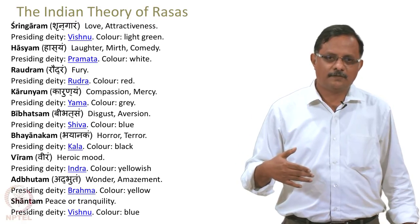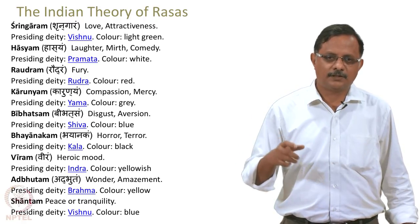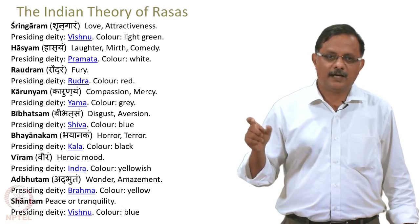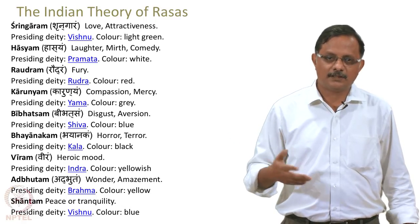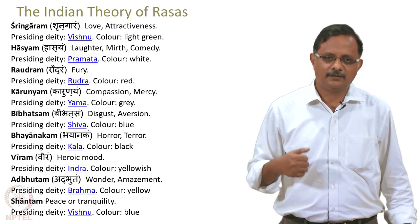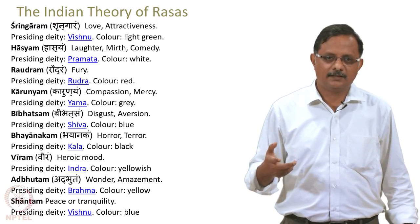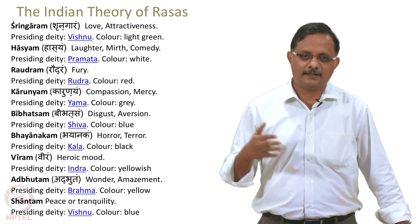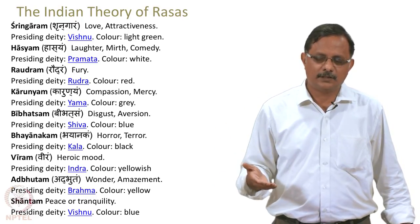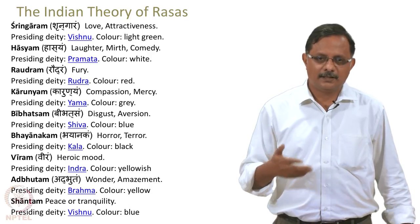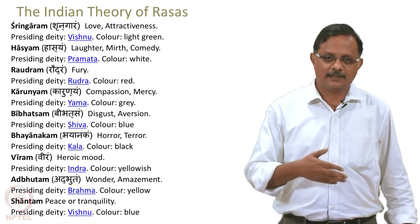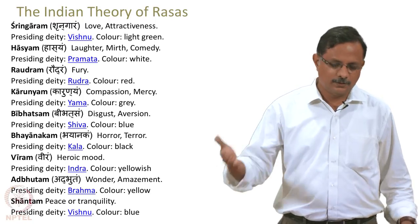In Indian theory of rasas, sringaram is associated with God Vishnu and the color light green. Haasyam is associated with a god named Pramatha, whose color is white. Raudram — whose presiding deity is Rudra (in fact the word raudram comes from Rudra) — is associated with the color red. So it is very interesting that emotions are associated with gods and also different colors.